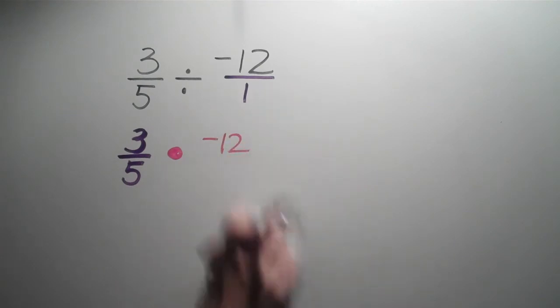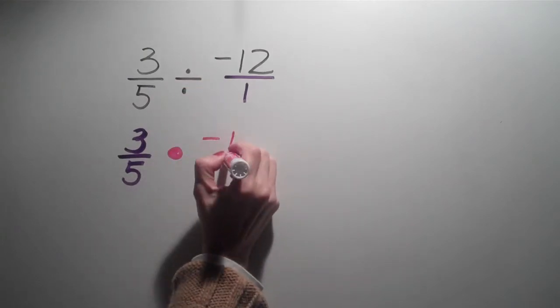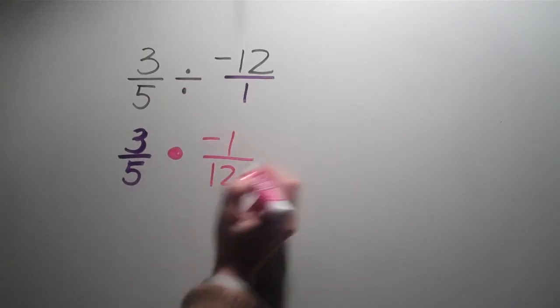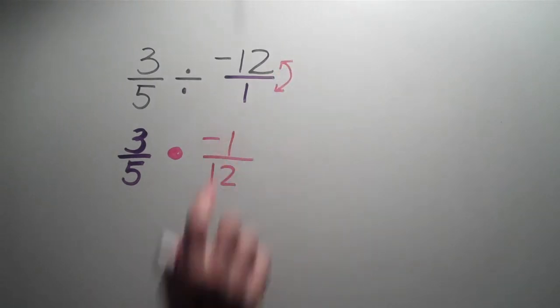Oh, sorry. Instead of 12 over 1, we said we needed to flip it, so it becomes negative 1 over 12. We're just flipping these two numbers, getting the reciprocal. But we keep the negative sign the same.